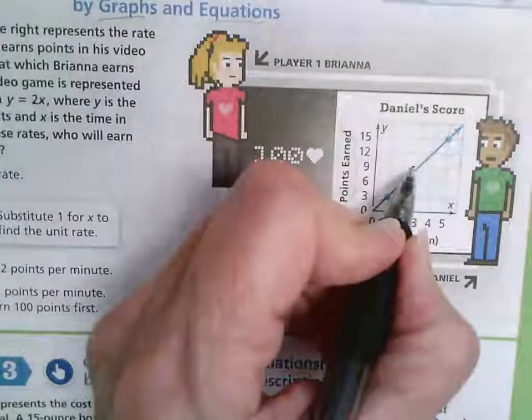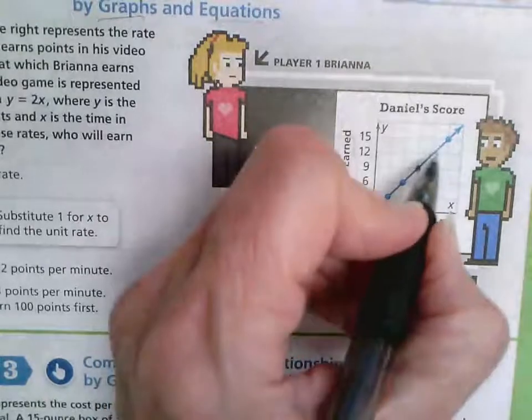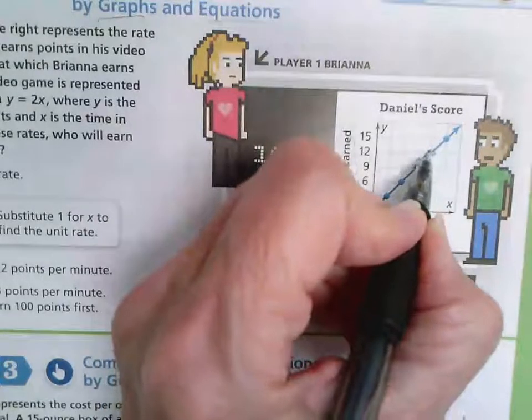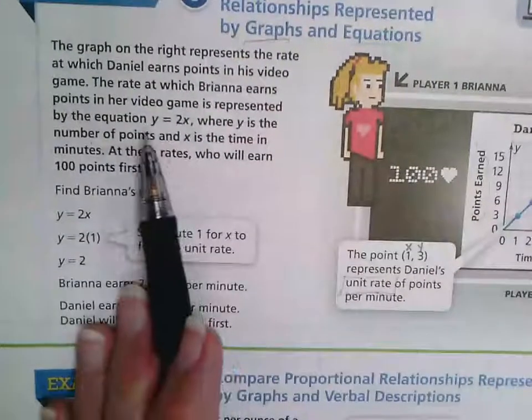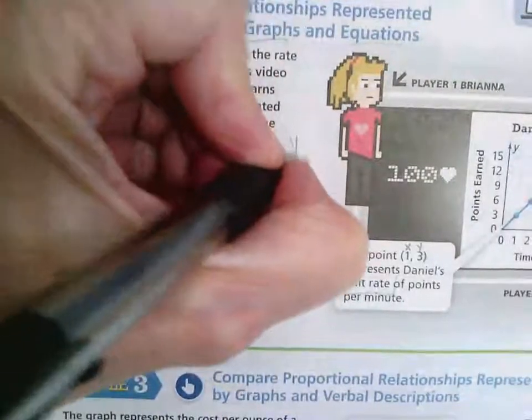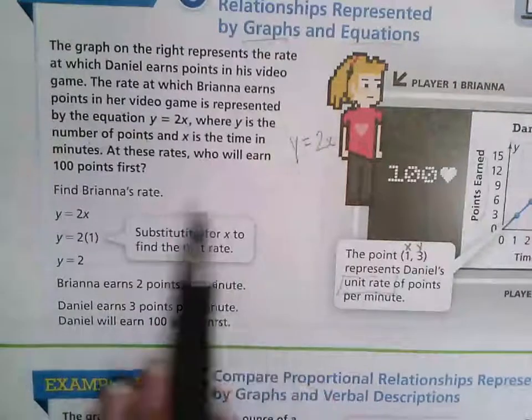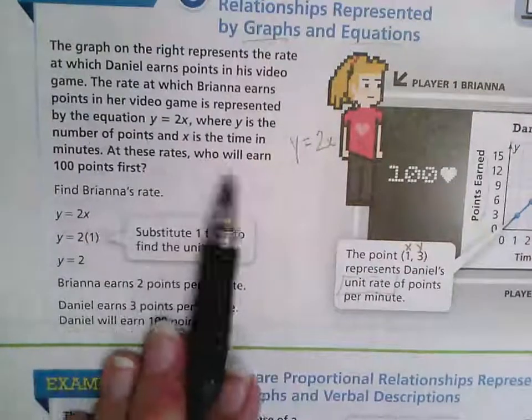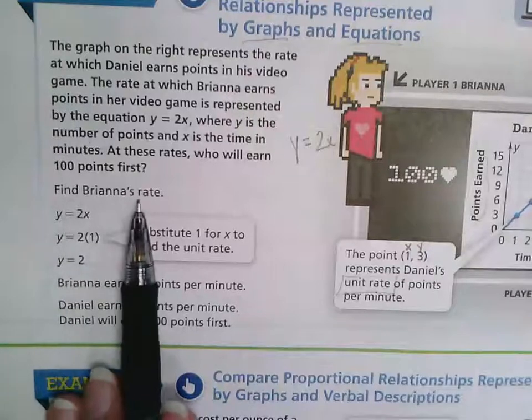Now, Brianna's is represented by y equals 2x. I'm going to write that next to her. At these rates, who will earn 100 points first? Well, first we want to find Brianna's rate.